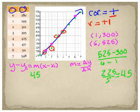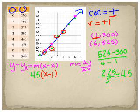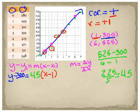So we end up with m = 45. Now I'm going to set up the point-slope form. I can choose either point — I'll go ahead and choose (1, 300) so it's nice and simple. With x₁ = 1 and y₁ = 300, the point-slope form is: y minus 300 equals 45 times the quantity x minus 1.